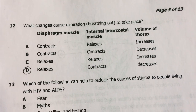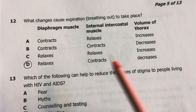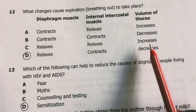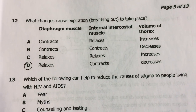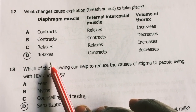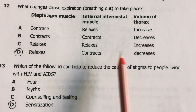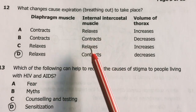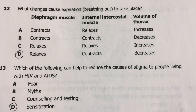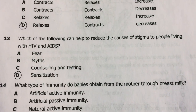Question 12: What changes cause expiration to take place? Relaxation of the diaphragm — it becomes dome-shaped as you breathe out — decreases the volume of the thorax. Additionally, contraction of the internal intercostal muscles causes the ribcage to move downwards and inwards, further decreasing chest cavity volume. The changes are in answer D.